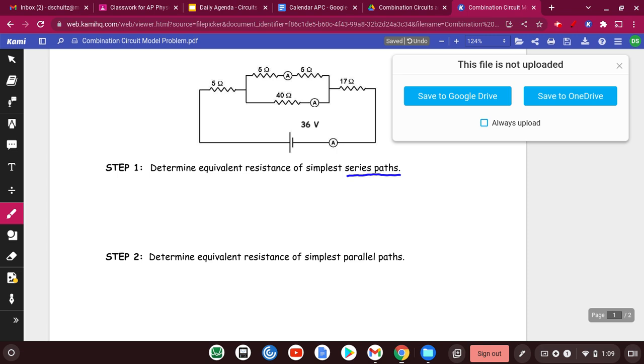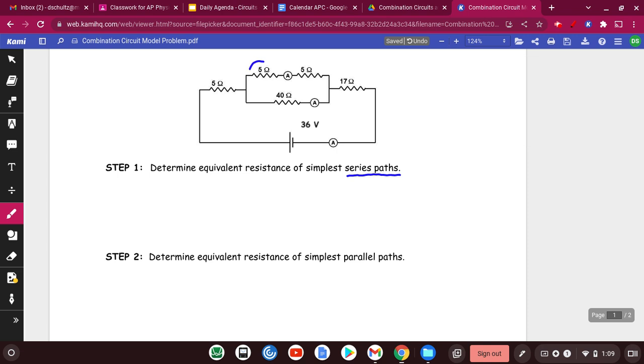What we see right away is that you've got these two resistors which are right next to each other. They are in series. And nothing else is in series, so don't think that first 5 ohm resistor is in series because it isn't because there is a junction here.